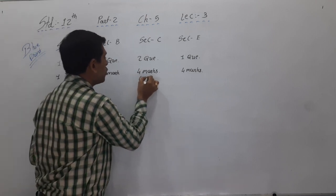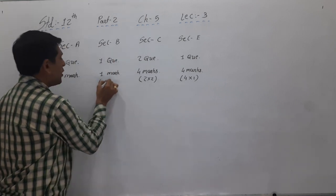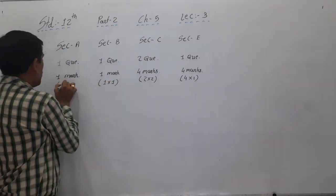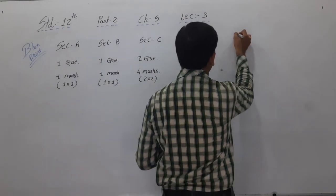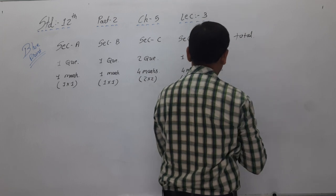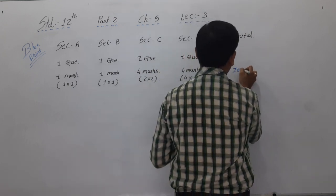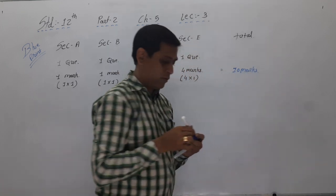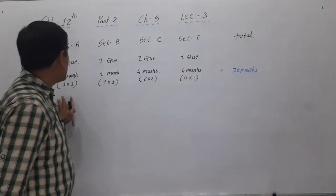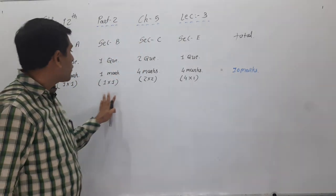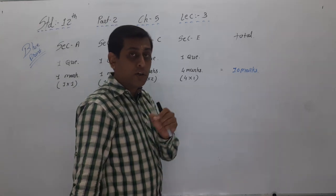So here: 2 into 2 = 4, and 4 into 1 = 4, plus 1 into 1 and 1 into 1. Total it is 10 marks. This chapter will be asked for 10 marks. So here 1 MCQ, 1 short question, 2 marks, and 2 questions that are short sums.